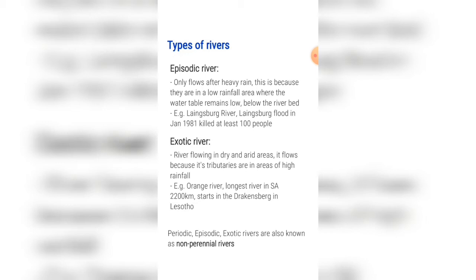An example is the Laingsburg River. The Laingsburg flood in January 1981 killed at least 100 people. This happened because the Laingsburg River had been dry for many, many years, and suddenly heavy rainfall caused all this water to be channeled into the river. It happened at night and people weren't aware. It flooded the entire town of Laingsburg. This just goes to show that no matter how dry a river looks or how long it has been dry, a river is still powerful and should be treated with respect. Don't go building houses in a dried-up river bed.